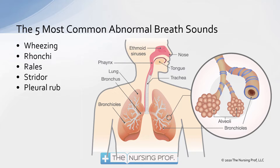First is wheezing. Wheezing can happen pretty much anywhere in the respiratory tract where there is a narrowing of the airway — it's like whistling. When you whistle, you purse your lips, making a smaller area for air to pass through, creating a whistling sound. The same thing happens with wheezing: the airway decreases in size due to bronchoconstriction or secretions forming in the airways. Ronchi, by contrast, is more of a harsh, bubbly sound, caused by secretions or a foreign body in the airway, with air bubbling past it.